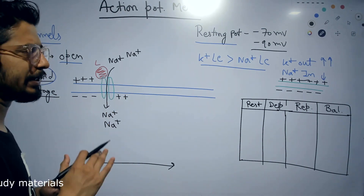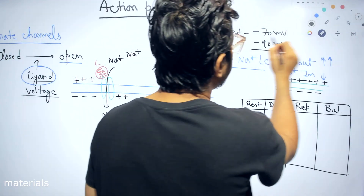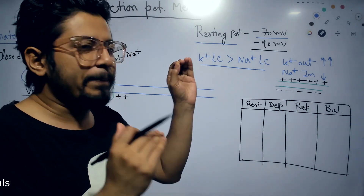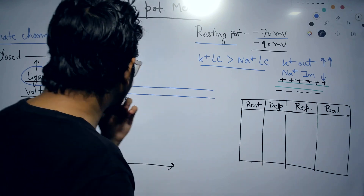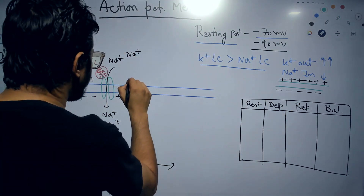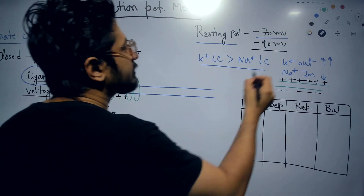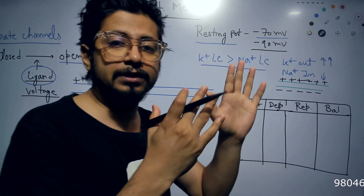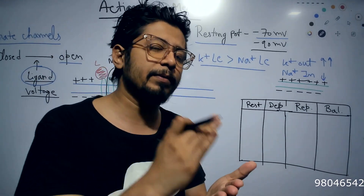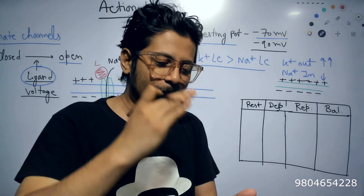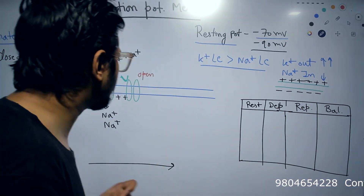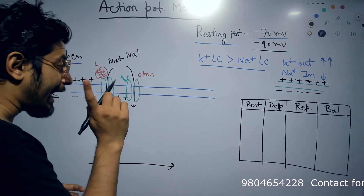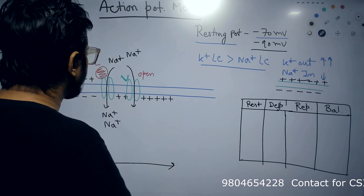Once the voltage alters a little — rising from minus 70 millivolts toward around minus 55 millivolts — a threshold is reached. If the voltage crosses that threshold, nearby voltage-gated sodium channels open up. Earlier, when voltage was minus 70, they were closed; once it reaches minus 55 to minus 50, the threshold is broken. When voltage-gated sodium channels open, more and more sodium ions are transported inside, and the cytosolic side of the membrane becomes very positive.